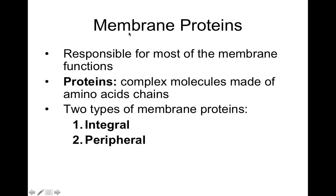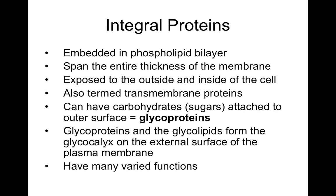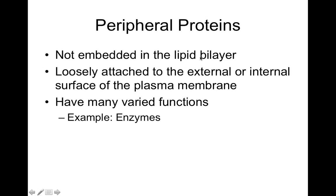Other membrane proteins found in the plasma membrane include integral proteins and peripheral proteins. Integral proteins span the entirety of the plasma membrane — they're embedded in the phospholipid bilayer and exposed to both the inside and outside of the cell. We also call these transmembrane proteins. Peripheral proteins are not embedded in the lipid bilayer — they're more loosely attached and are often enzymes, meaning they're involved in chemical reactions.